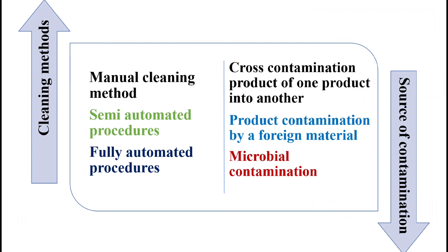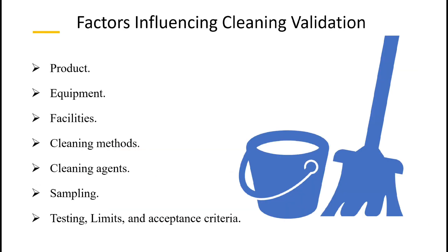There are different cleaning methods used: manual cleaning, semi-automated, and fully automated. Sources of contamination include cross-contamination of one product into another, product contamination by a foreign material, and microbial contamination. Factors that influence cleaning validation include the product, equipment, facilities, cleaning methods, cleaning agents, sampling, and acceptance criteria. The cleaning method should be very sensitive — it should be able to remove all contaminants and residues. There are two sampling methods which will be discussed further: indirect sampling and direct sampling.